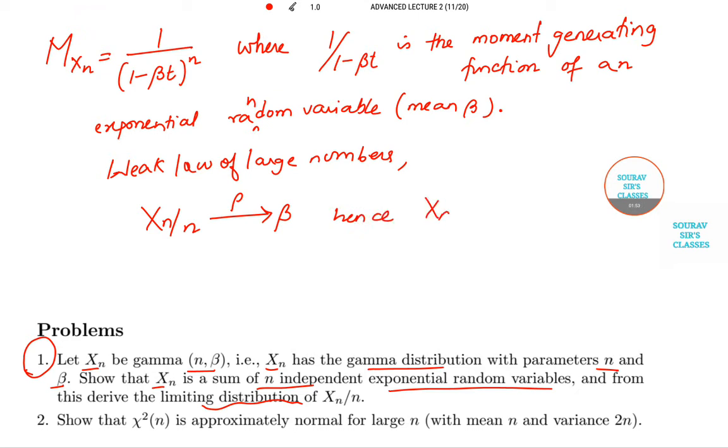Hence, Xn by n tends to beta d, which is what we are required to prove.